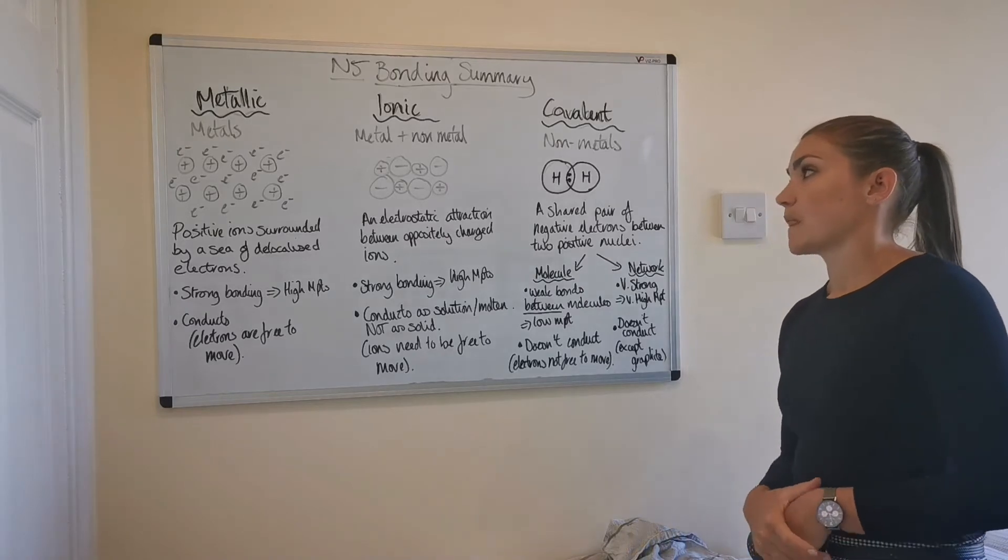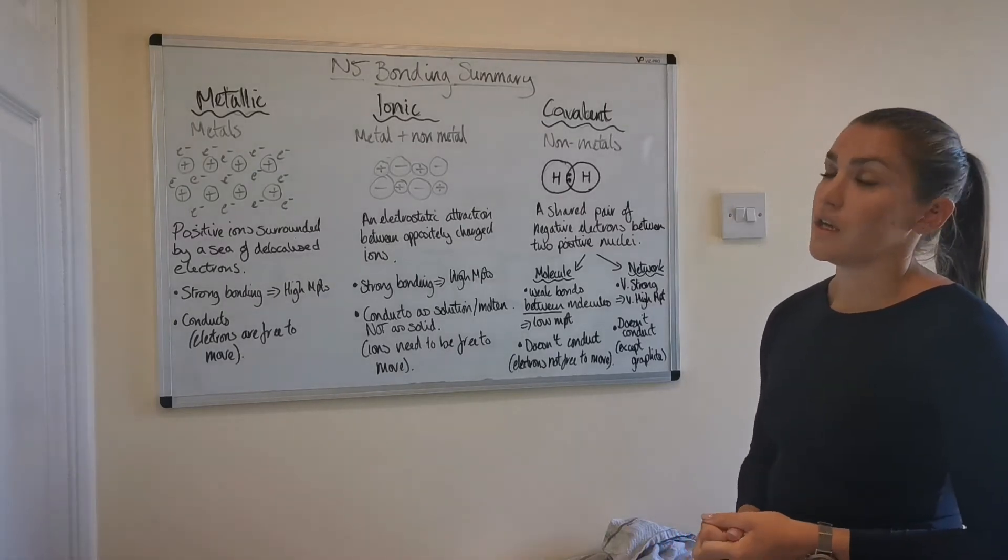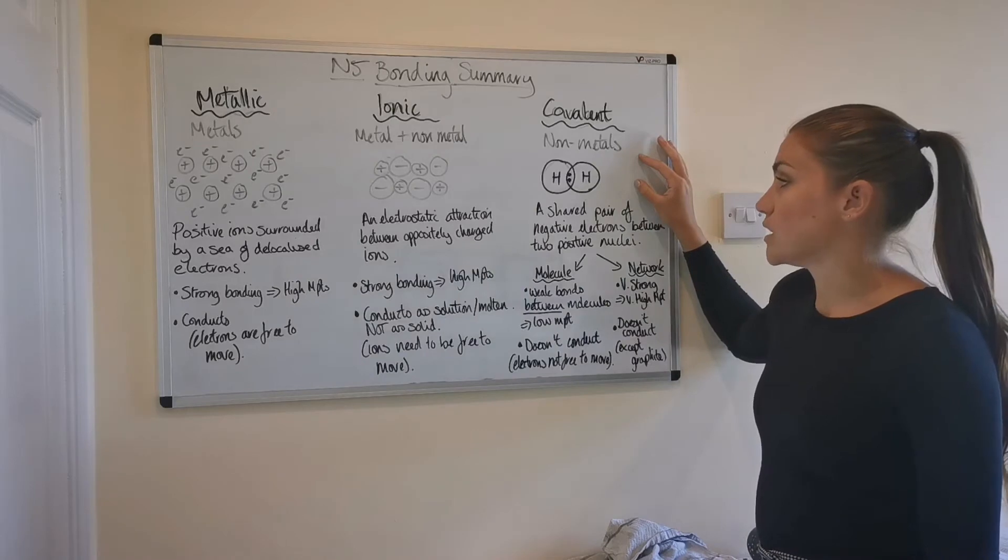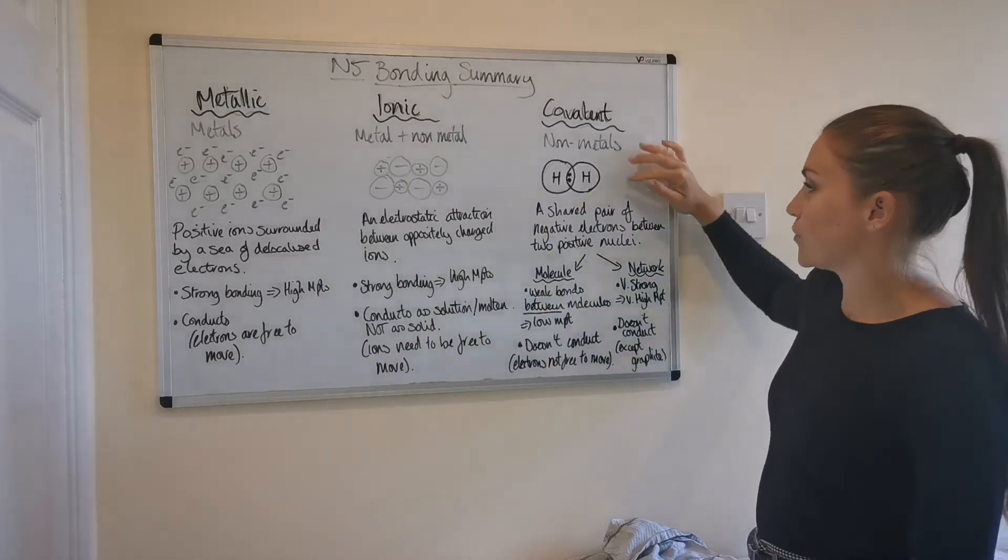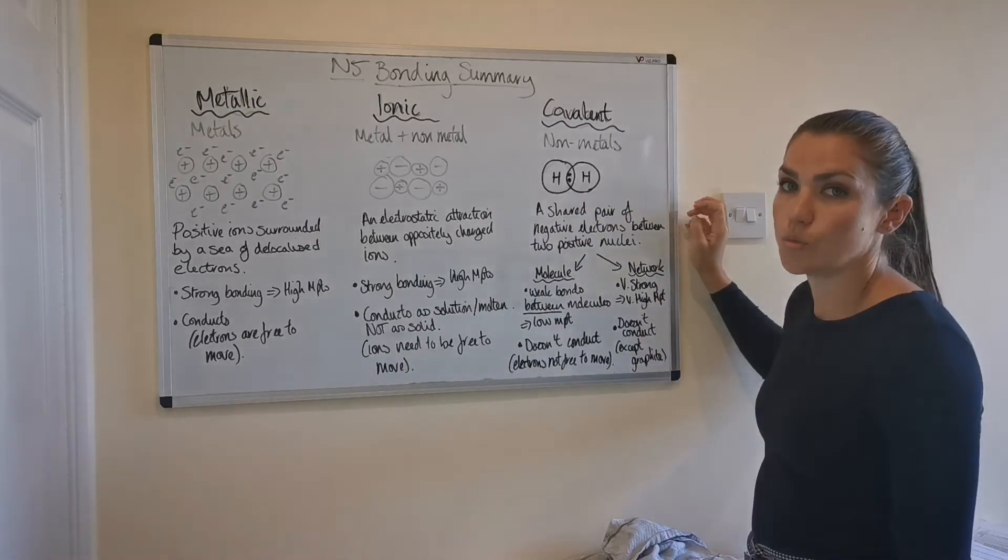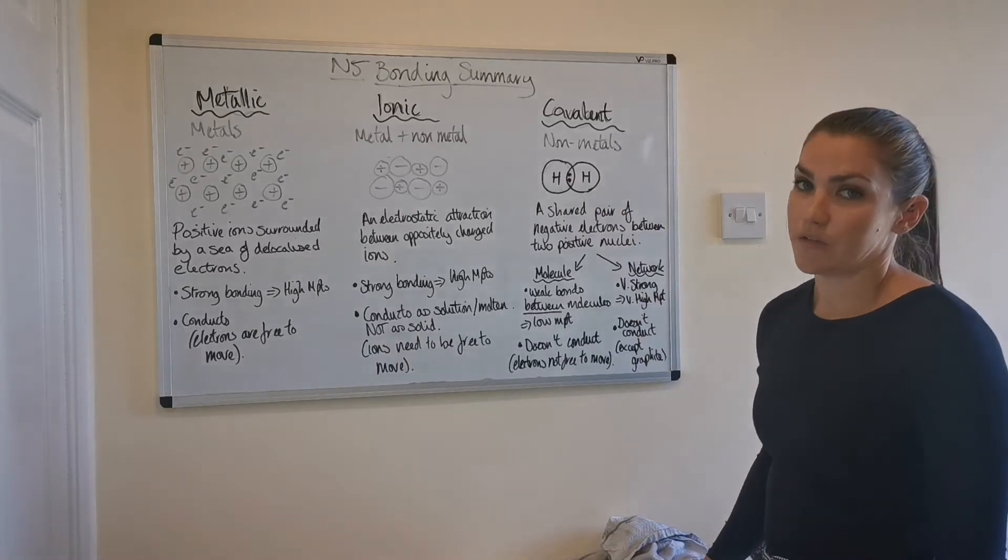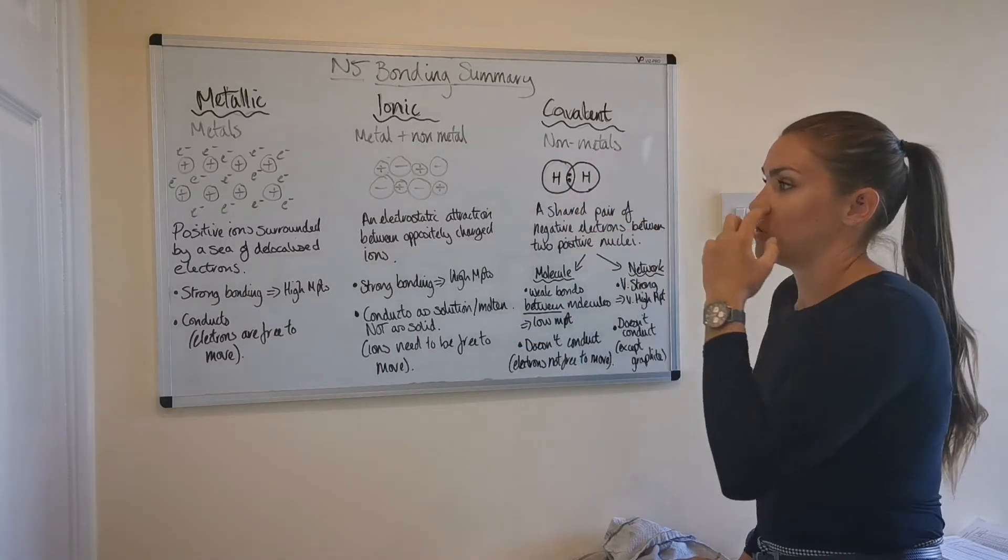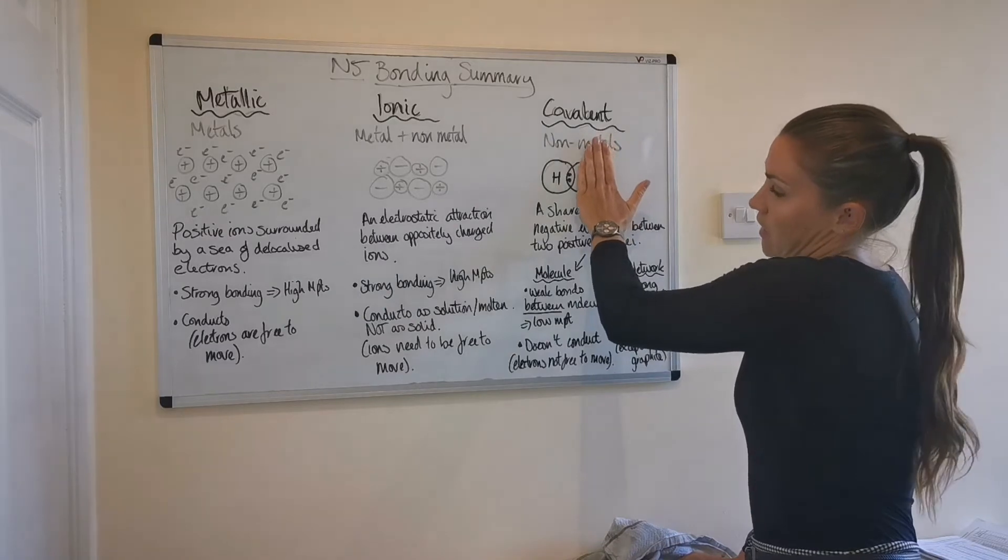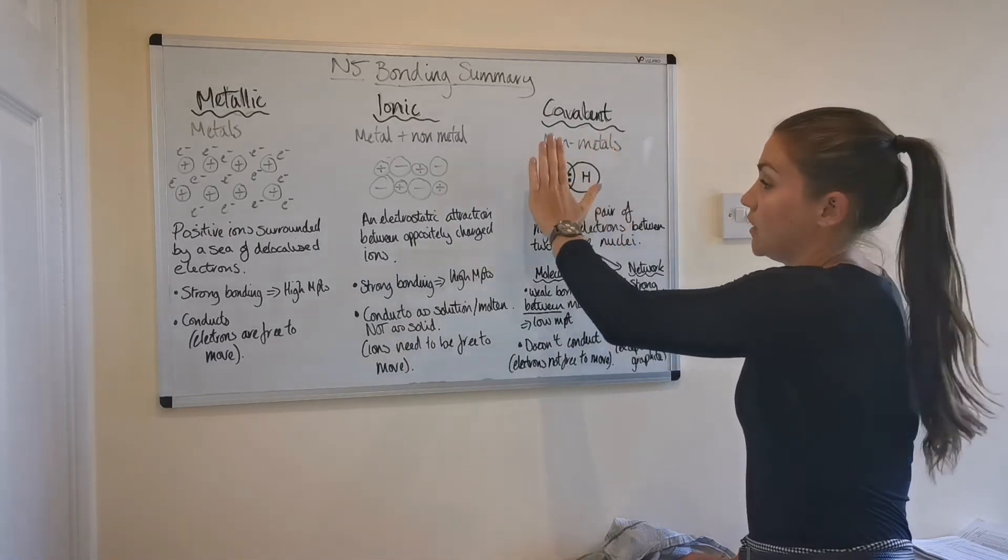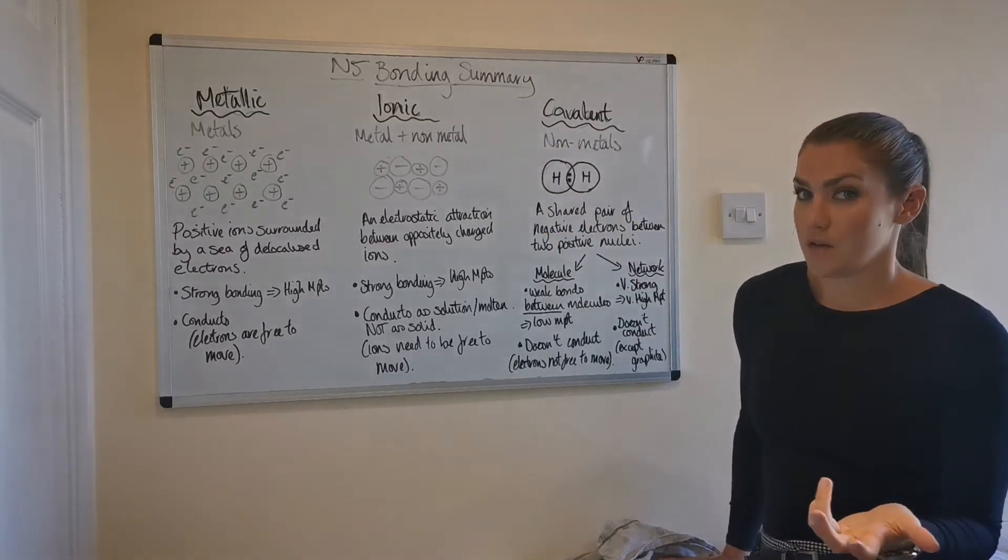So then the last one, covalent bonding. So that occurs between non-metal atoms. So if you have two non-metal atoms joined together, then it will most likely be covalent bonding that's joining them. And here we've drawn a diagram of two hydrogen atoms joined together. And covalent bonding is described as a shared pair of electrons between two positive nuclei. So in the middle of these hydrogen atoms, there's two positive nuclei that are mutually attracted to that shared pair of electrons. And the reason they share electrons is so that they can obtain a stable electron arrangement. Because if I cover up this one, that hydrogen now has a full outer shell of two. And then this one also has a full outer shell of two. So they're both now more energetically stable because they're sharing a pair of electrons.